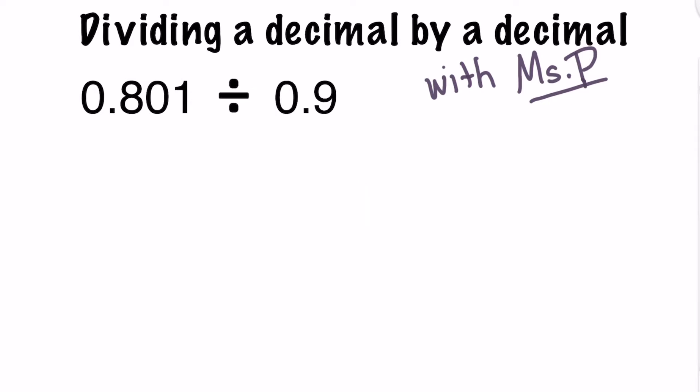So we should begin by taking the problem and rewriting it in a way that is a little bit easier for us to work with. So we can rewrite this as 801 thousandths divided by 9 tenths. Remember, since the divisor is a decimal number, we're going to have to multiply it by powers of 10 until we can make it into a whole number before we proceed.